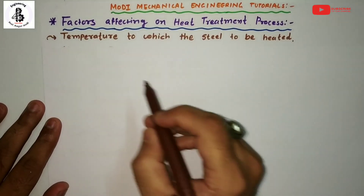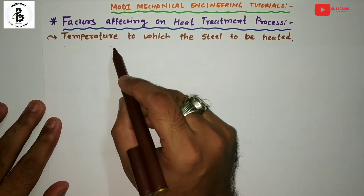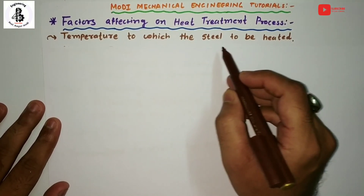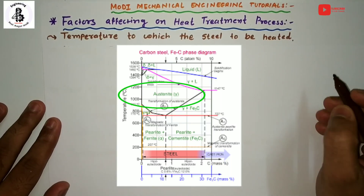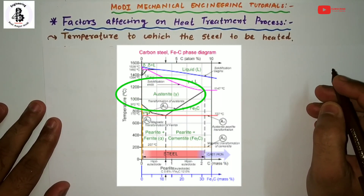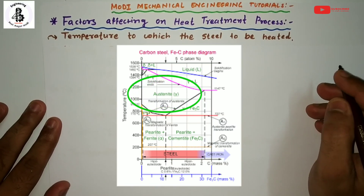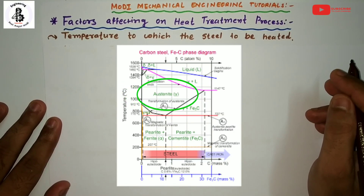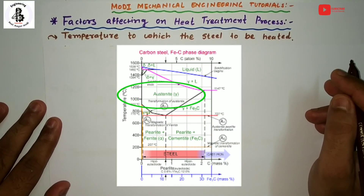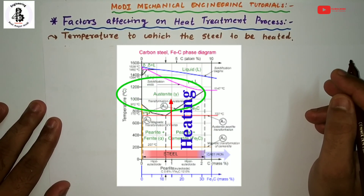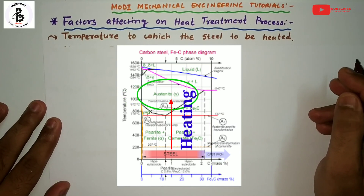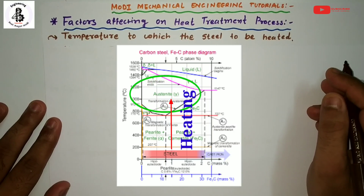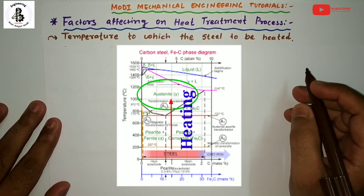The first factor is the temperature to which the steel is to be heated. Basically this factor depends upon the weight percentage of compositions in the steel. According to the iron-carbon diagram, the temperature to which the steel is to be heated is up to the austenite range. Austenite is the soft phase of the steel and it is basically formed at a higher temperature.